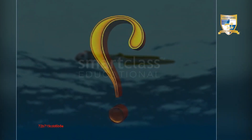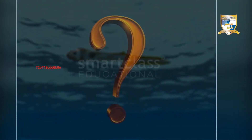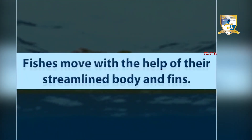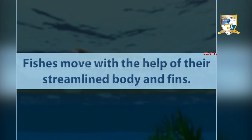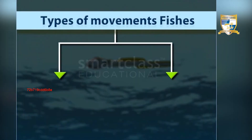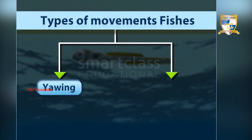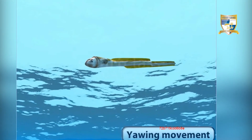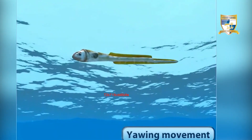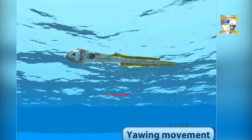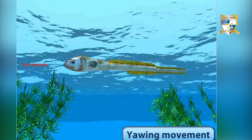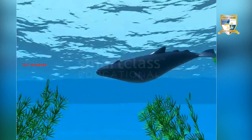Fish move easily in water with the help of their streamlined body and fins. Fish show two types of movements: yawing and pitching. In yawing movement, fish move their body away from a straight line in order to change direction or make a turn in the same horizontal plane.